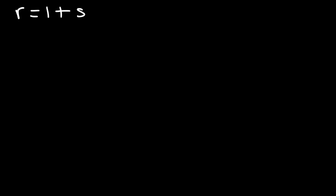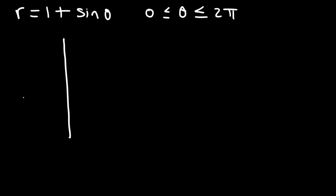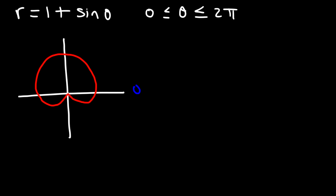Now let's work on another problem. Let's say r is 1 plus sine theta, and theta is between 0 and 2 pi. The graph looks something like this — going from 0 to pi over 2 to pi, then 3 pi over 2, and 2 pi. We want to find the arc length of the curve highlighted in blue.